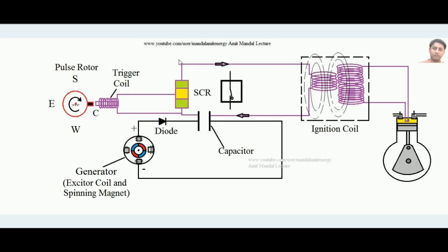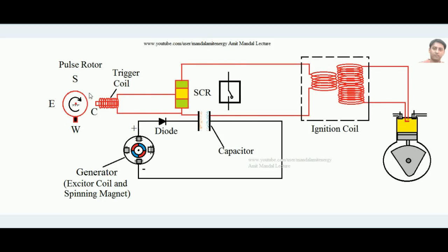When the SCR becomes a closed switch, all the charge developed between the plates of the capacitor flows through the primary coil of the ignition coil. High voltage is developed in the secondary coil as the magnetic flux links with it — the change in magnetic flux induces a high voltage sufficient to develop the spark. After the spark, the magnet moves away, the SCR returns to open circuit, and the capacitor begins charging again.